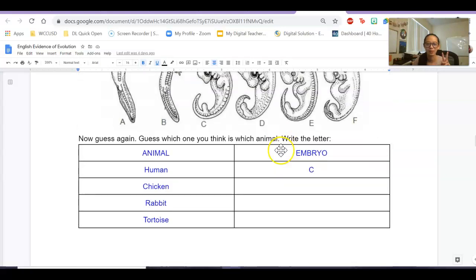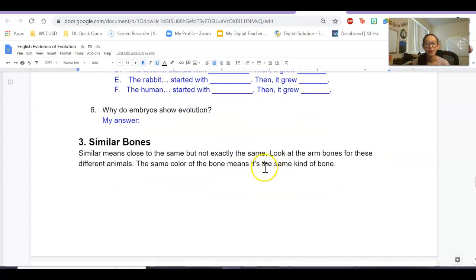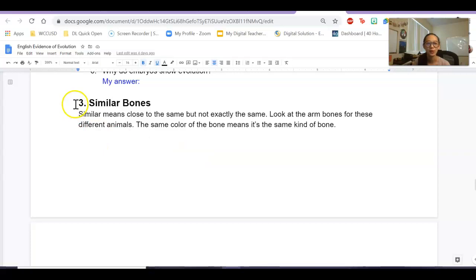And we also wrote our answers on here. So we should be starting with number three, similar bones. So similar means close to the same, but not exactly the same. They're close together.